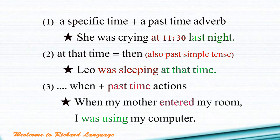The second way to use past continuous tense is whenever you see 'at that time' or 'then.' For example: 'Leo was sleeping at that time.' So when you see 'at that time' or 'then,' you can use past continuous tense. But remember, you can also use past simple tense with 'then' or 'at that time' — both tenses are correct in this case.